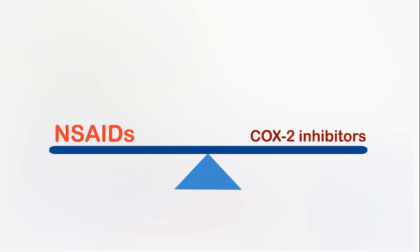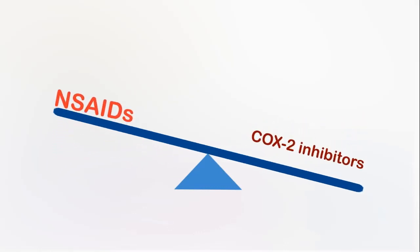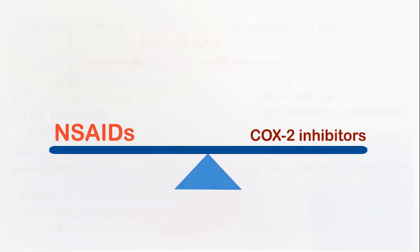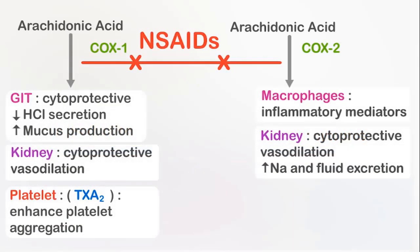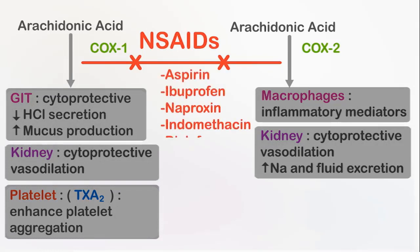The desired and unwanted side effects of both drug groups will be thoroughly compared in the remainder of the video. Non-selective NSAIDs are a large family of popular drugs, among the most commonly prescribed medications in this group. They include aspirin, ibuprofen, naproxen, indomethacin and diclofenac.